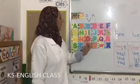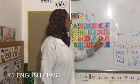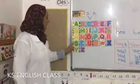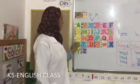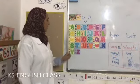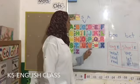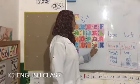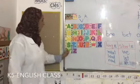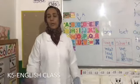O — octopus. P — panda. Q — quill. R — rabbit. S — snake. T — tortoise. U — unicorn. V — vulture. W — well. X — xema. Y — yak. Z — zebra.